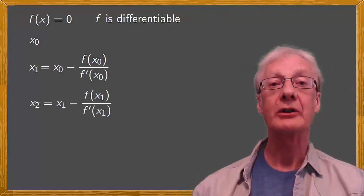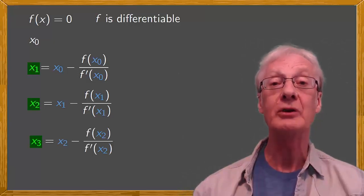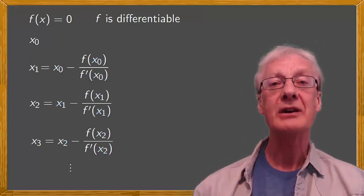Moving on, we can obtain x3 using x2. x3 is equal to x2 minus f of x2 over f prime of x2, and so on. In general, if we want to calculate the term xn from the previous one, we do it in exactly the same way.